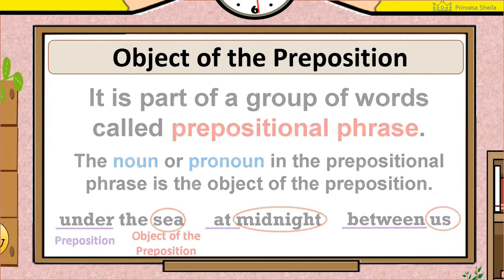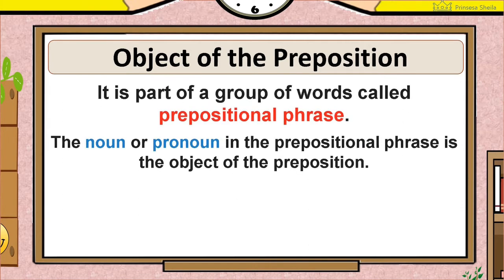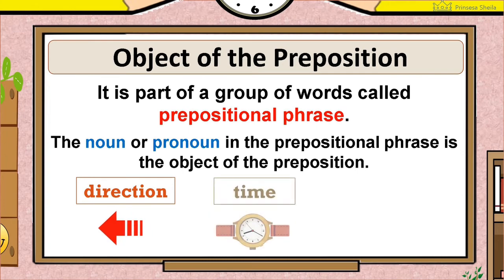Here are some commonly used prepositions. Object of the preposition conveys information about direction, time, or place.